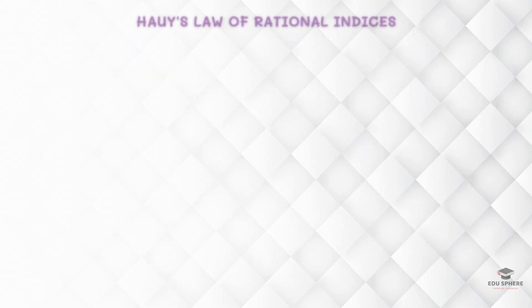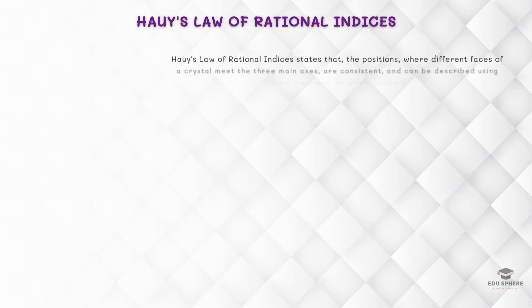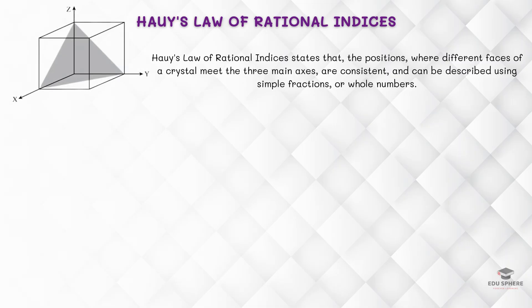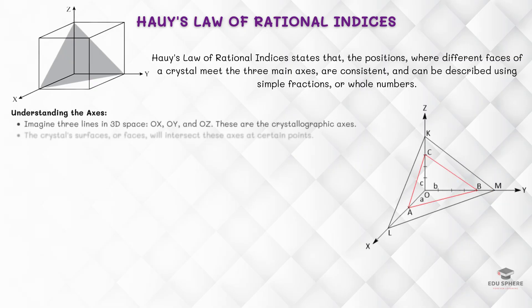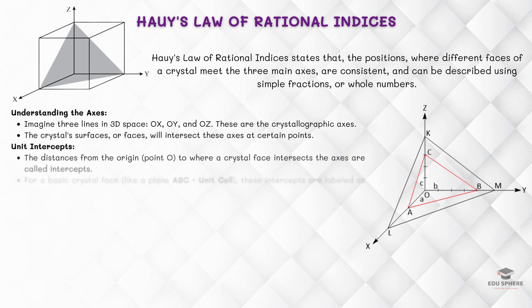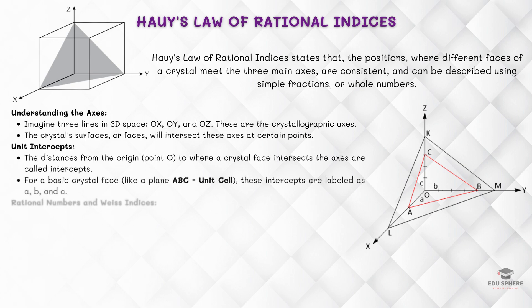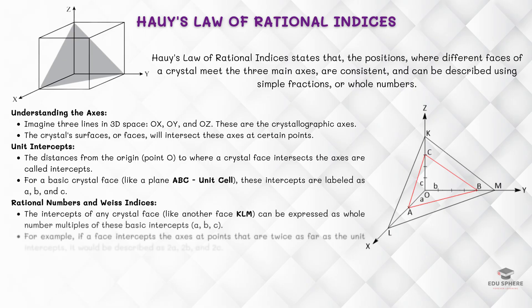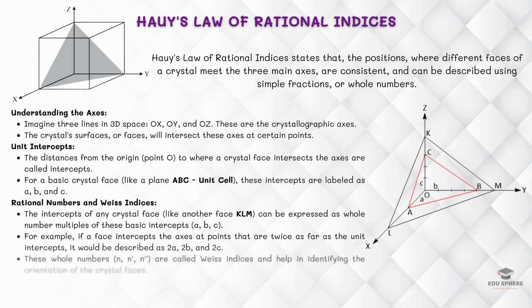Haüy's law of rational indices helps us understand how crystals are structured. The law states that the positions where different faces of a crystal meet the three main axes are consistent, and can be described using simple fractions or whole numbers. You can imagine three lines in 3D space — X, Y, and Z — these are the crystallographic axes. The distances from the origin, point O, to where a crystal face intersects the axis are called intercepts. The intercepts of any crystal face can be expressed as whole number multiples of the unit face intercepts.